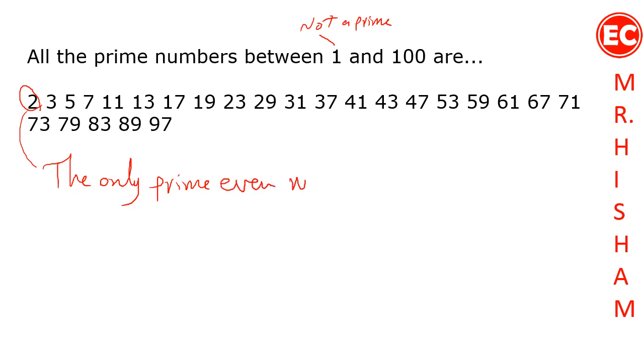So for all the numbers between 1 and 100, any even number is not a prime except 2. 3 is a prime, 5 is a prime, 7 is a prime. 9 is not a prime number. Why? Because 3 times 3 gives me 9.